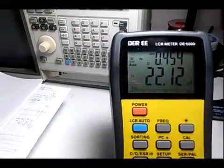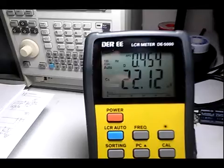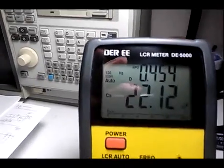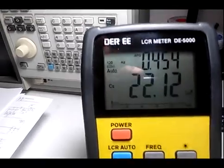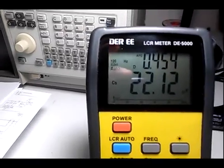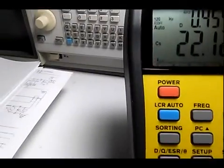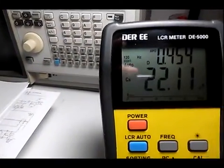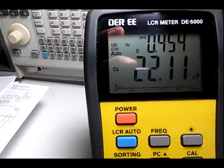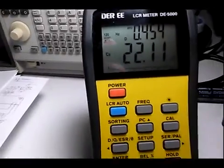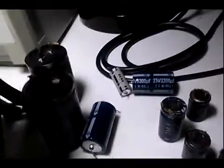Now, this illustrates the point. It's 22 microfarad, which is registering 22.12. But look at the dissipation factor. The dissipation factor should be about 0.20. So, it really shows that the equivalent series resistance is too high in this capacitor. So, it really should be changed.